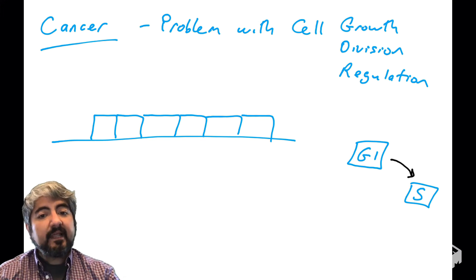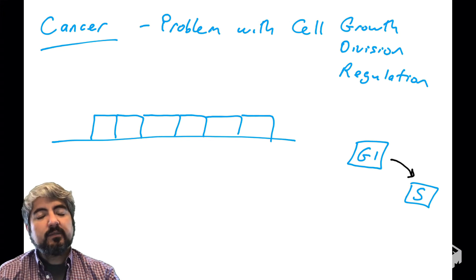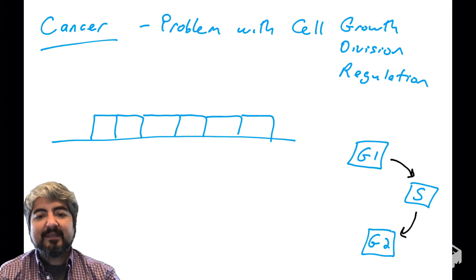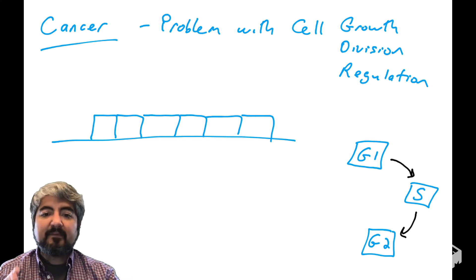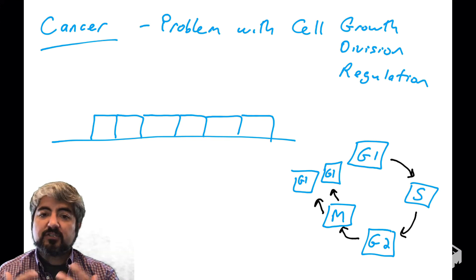And only when we need more cells will cells go through the cell cycle. So they'll enter S phase, which is when DNA synthesis occurs and the genome becomes replicated. Then there'll be a gap phase, G2 phase, before the mitotic phase where the cells undergo mitosis. And you have the production of two daughter cells.